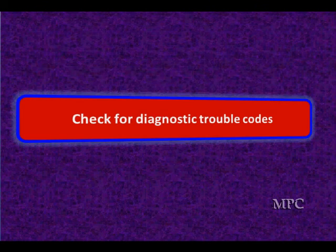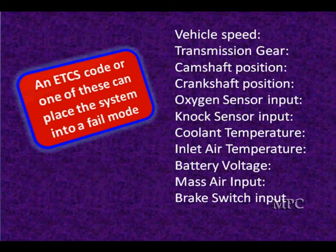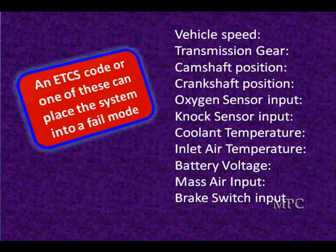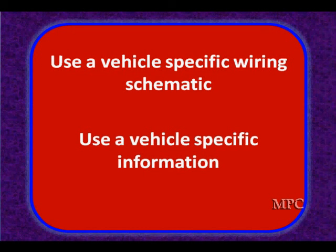Diagnostically, go look at your sensors and figure out what's going on — it's not as bad as you think. Check for any diagnostic trouble codes and eliminate those up front. An ETC code can place the system into a fault mode; these will typically place it in a limited mode rather than a total shutdown, and such codes are rare. The system depends on mass airflow, coolant temperature, inlet air temperature, crankshaft and camshaft position sensors for engine speed and load, and a functioning brake input switch. Use vehicle-specific wiring diagrams to work on these.